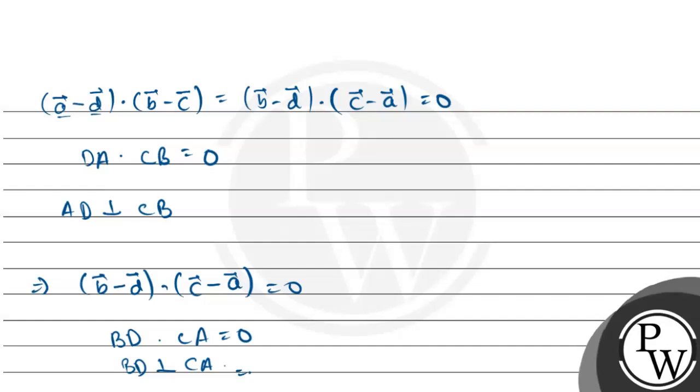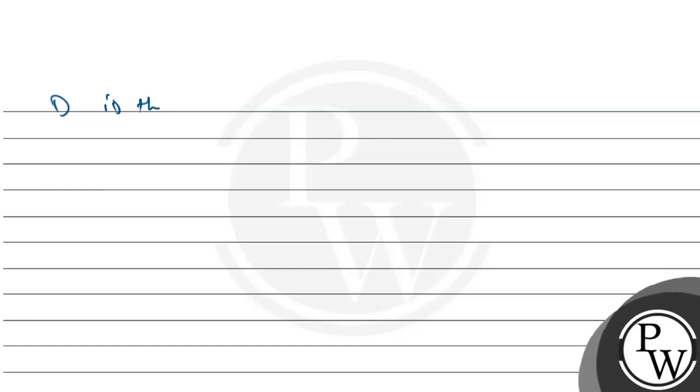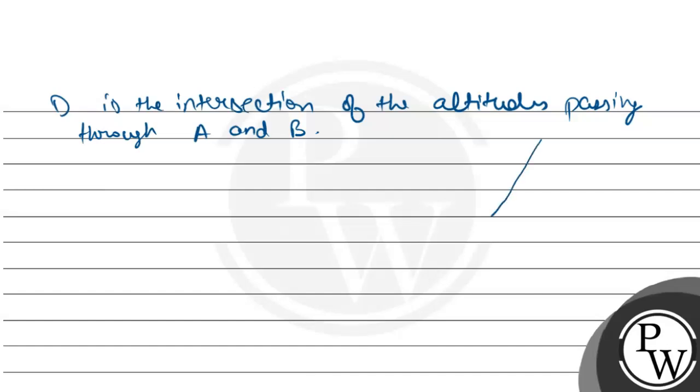So we can see which is perpendicular. This is the intersection of the altitude passing through A and B.